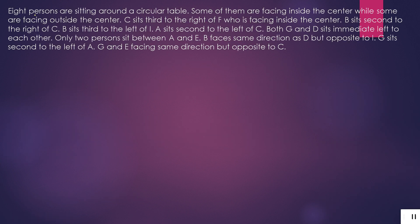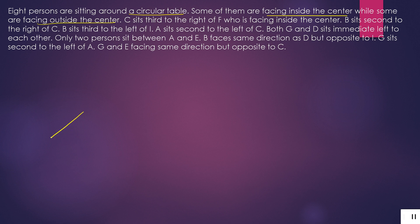So our first sentence is: 8 persons are sitting around a circular table — ek vratakar mez ke chaaro orr 8 vyakti baithe hain. Some of them are facing inside the center while some are facing outside the center — kuch kendra ki orr dekh rahe hain aur kuch kendra se viprit. So first let's make a diagram. T sits third to the right of F, who is facing inside the center.